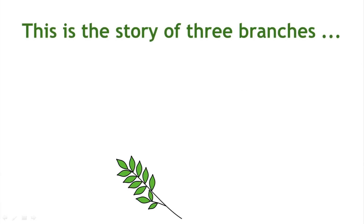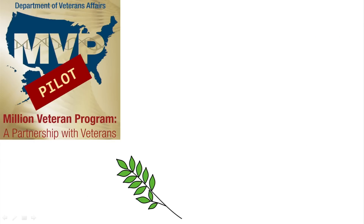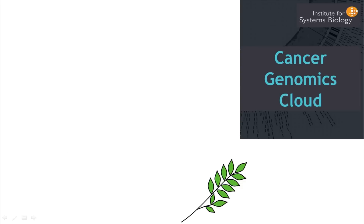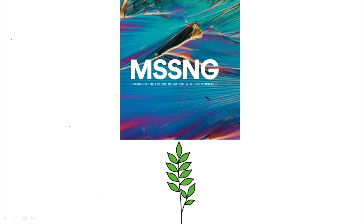What I'm going to talk about is three branches that are ongoing projects. I'm going to give a quick update on each of these and then talk about some of the commonalities and differences between these projects and see how it generalizes. I'm going to talk about some work that's happening out of the VA, some work that the NIH and NCI is funding on cancer genomics, and some work that nonprofit organization Autism Speaks is doing to understand the genetics of autism. Compare and contrast — see what can we learn from these branches and where can we build on the work that's already happening.